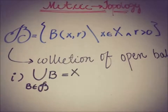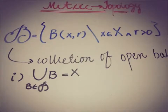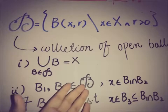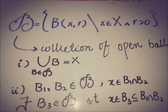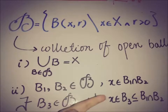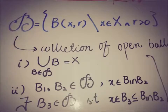The first property is that the union of all open balls from this collection is equal to X. The second property is: if we take two open balls from this collection and a point x in their intersection, then there exists an open ball B3 from the collection such that x belongs to B3 and B3 is a subset of the intersection of the two open balls. We will prove both properties are satisfied by this collection.